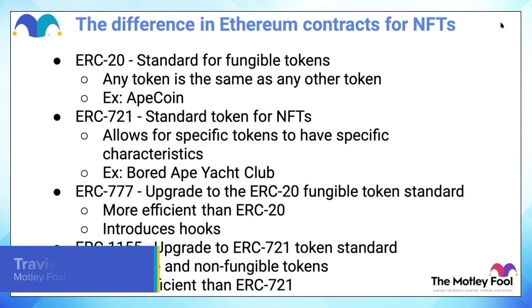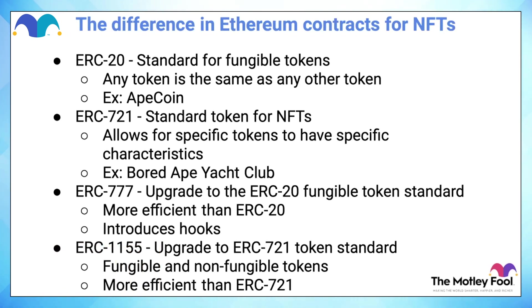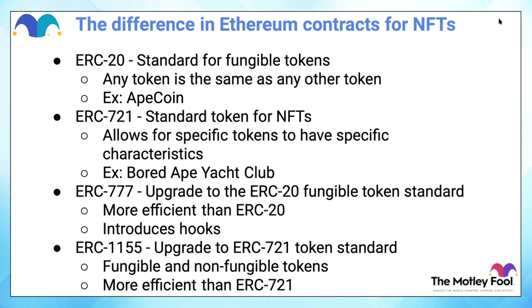There are four types of contracts on Ethereum, and all this information is from the Ethereum site — I wanted to go straight to the source and get their take on what these are for, because sometimes these kinds of things are built for one thing and used for another. So this is just the broad overview. ERC-20 contracts are for fungible tokens.